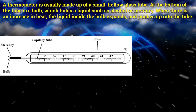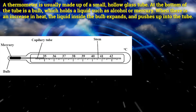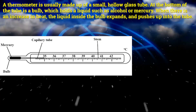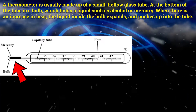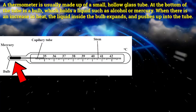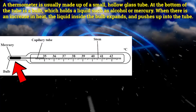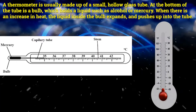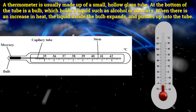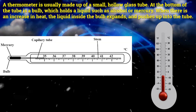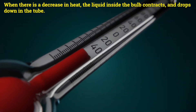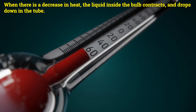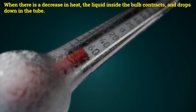A thermometer is usually made up of a small hollow glass tube. At the bottom of the tube is a bulb, which holds a liquid such as alcohol or mercury. When there is an increase in heat, the liquid inside the bulb expands and pushes up into the tube. When there is a decrease in heat, the liquid inside the bulb contracts and drops down in the tube.